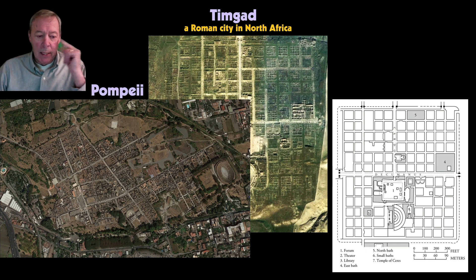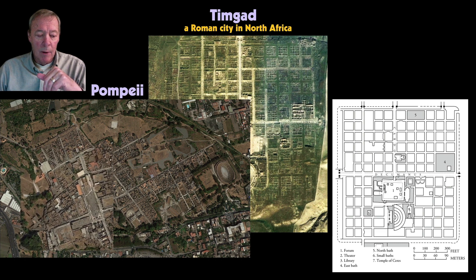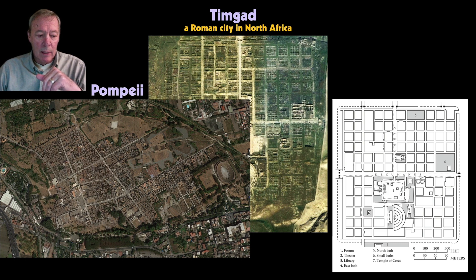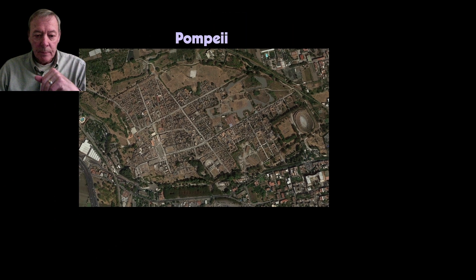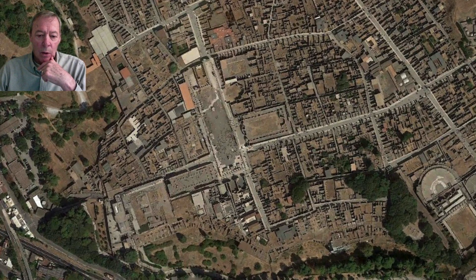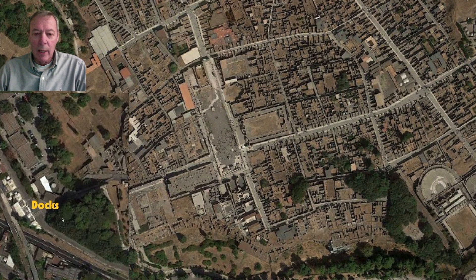Here we see Pompeii, which is not as logically organized because Pompeii did not begin as a Roman city—it began as a city of the Samnites, and that earlier portion shows somewhat ill-organized streets. As we move into the Roman areas, we get more logical street organization. Zooming in on the earliest part, we see this area would have been the docks, though today it is several miles from the sea coast; in the days of the empire, the sea coast ran right along here.